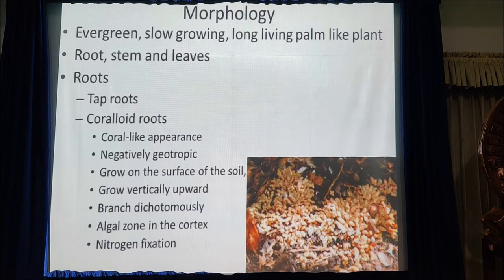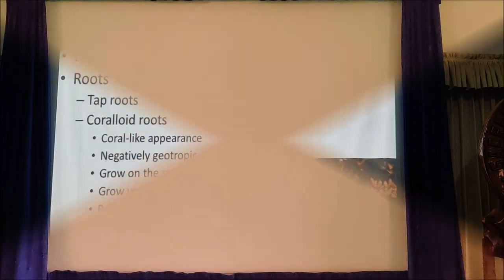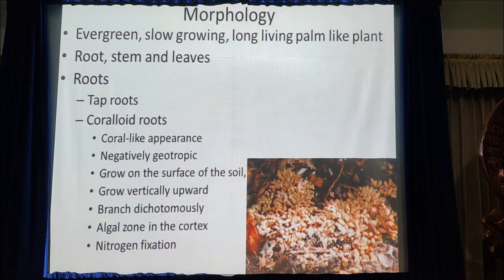Cycas is an evergreen, slow-growing, long-living, palm-like plant, and the plant body is differentiated into root, stem and leaf.